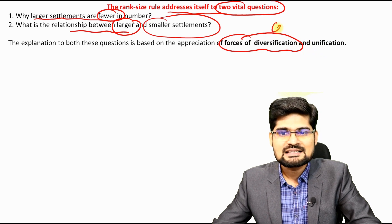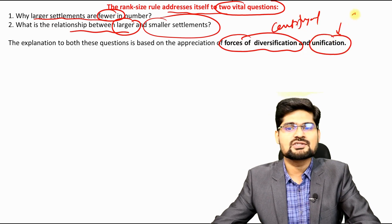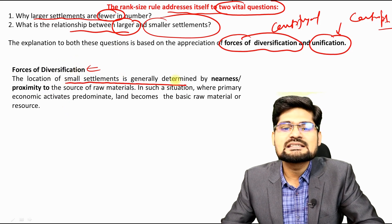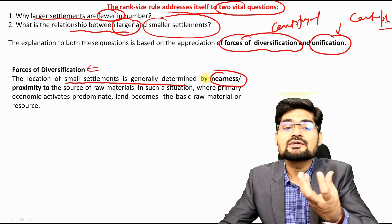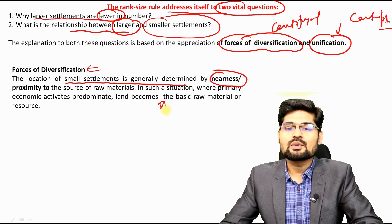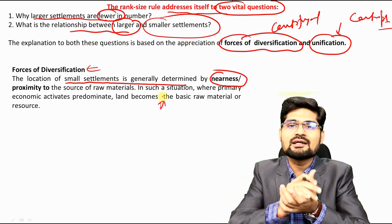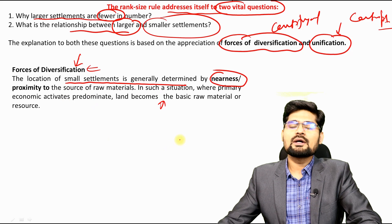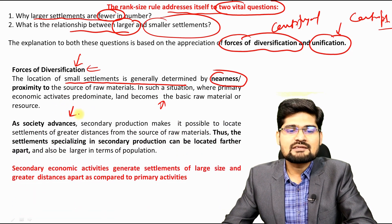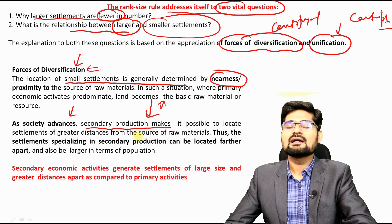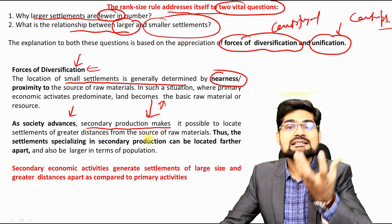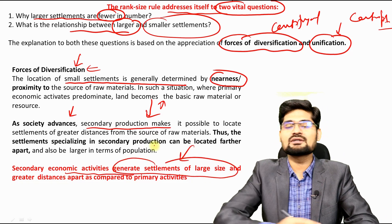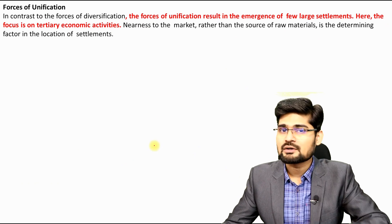To understand this, we must understand two forces: forces of diversification (centrifugal forces) and forces of unification (centripetal forces). Forces of diversification: the location of small settlements is generally determined by the proximity factor — nearness to resources, raw materials, water, and land. As society advances, secondary production and manufacturing start to grow, making cities bigger through diversification of the economy.